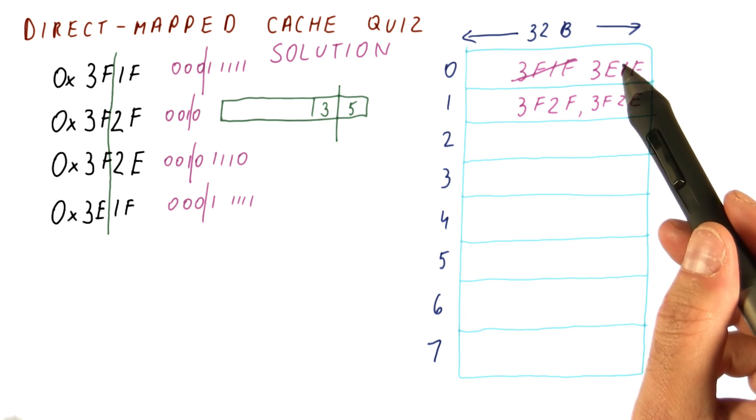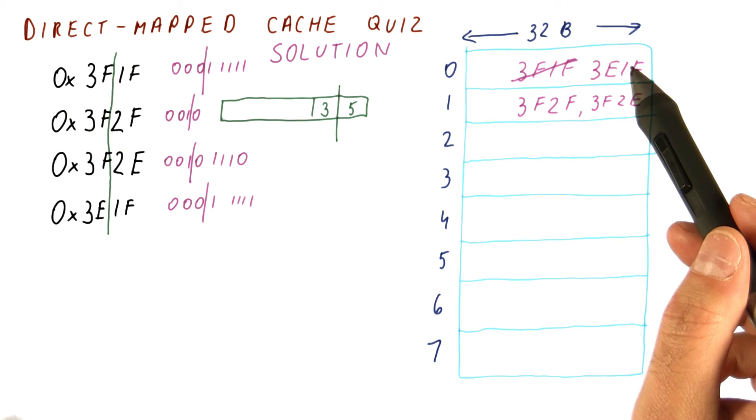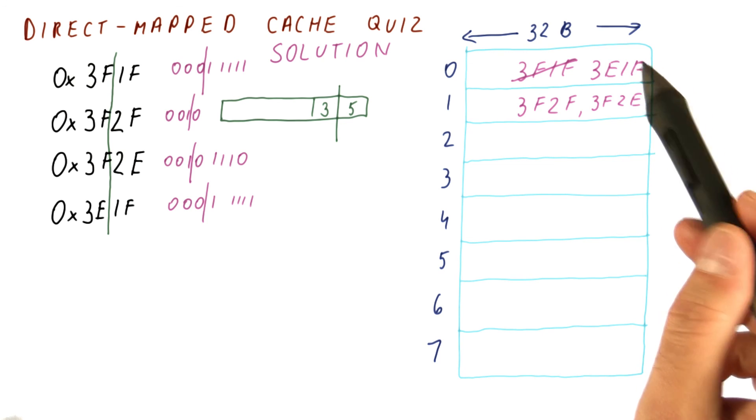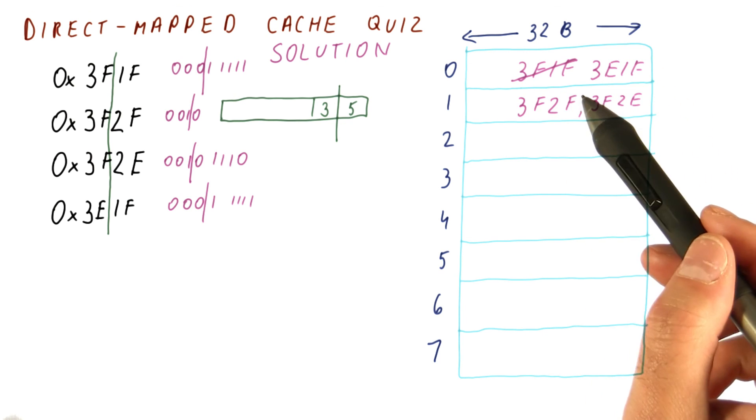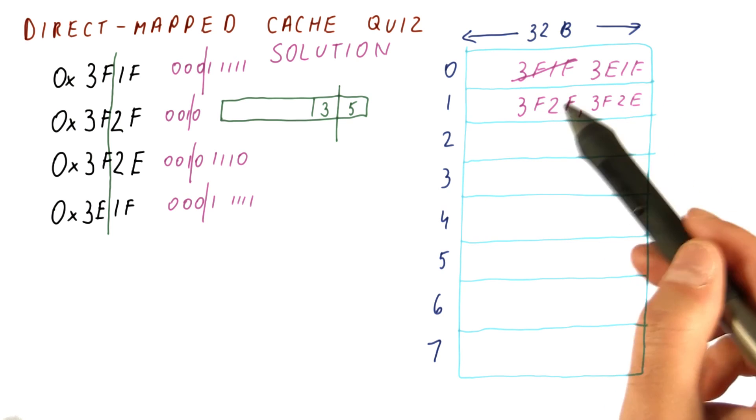So the final content of the cache really is that the block 3E1 something is here, and 3F2 something is here. So this is all the right points. Thank you.